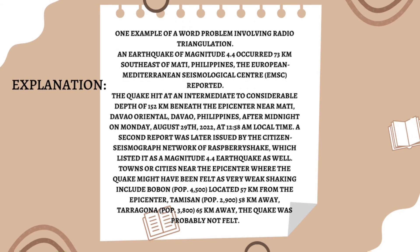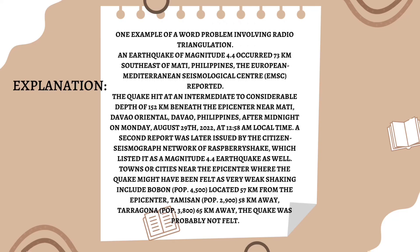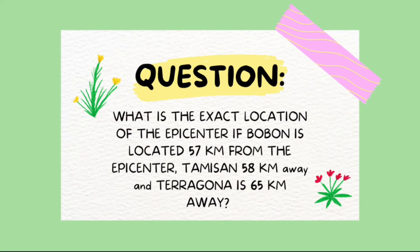The second report also listed it as a magnitude 4.4 earthquake. Towns or cities near the epicenter where the earthquake might have been felt as very weak shaking include Bobon, located 57 kilometers from the epicenter; Tamisan, 58 kilometers away; and Tarragona, 65 kilometers away. The question is: what is the exact location of the epicenter, given that Bobon is 57 kilometers, Tamisan 58 kilometers, and Tarragona 65 kilometers from the epicenter?